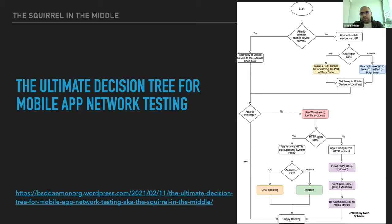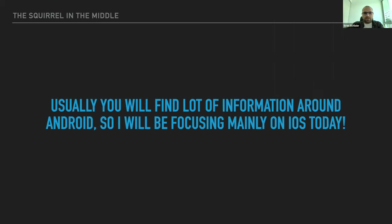This talk is specifically about how you can intercept the network traffic of a mobile app. I won't go into much detail of the decision tree you can see on the right — if you want to go through that, have a look at the blog post for more details and a high-resolution version. The examples I'll be showing today will be mainly about iOS, since there's already a lot of information out there for Android.